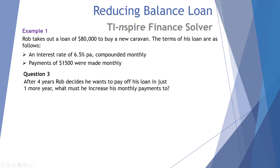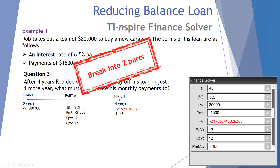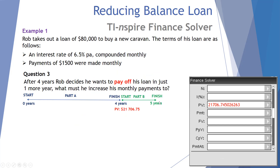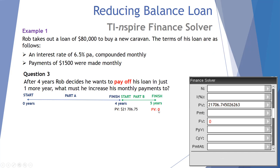Question three: after four years, Rob decides he wants to pay off his loan in just one more year — the fifth year. What must he increase his monthly payments to? We split this into two parts. Part A ended with a future value of $21,706.75. That final value for the end of part A becomes the initial principal for part B. So at the start of part B, PV is $21,706.75, and the future value will be zero — we're paying this off completely.